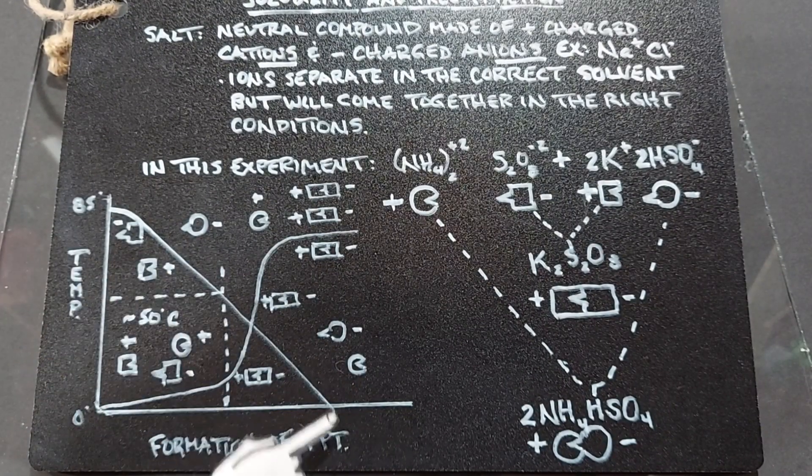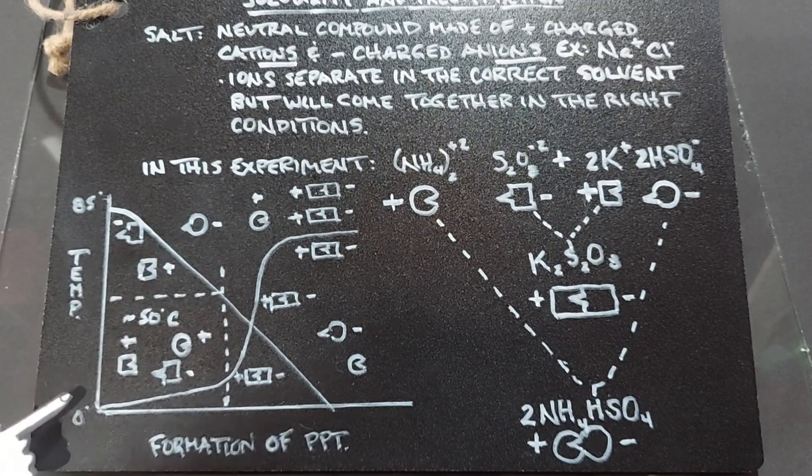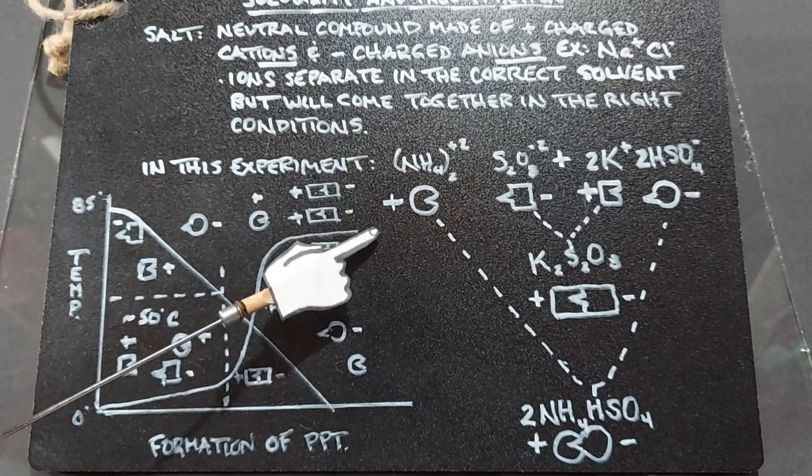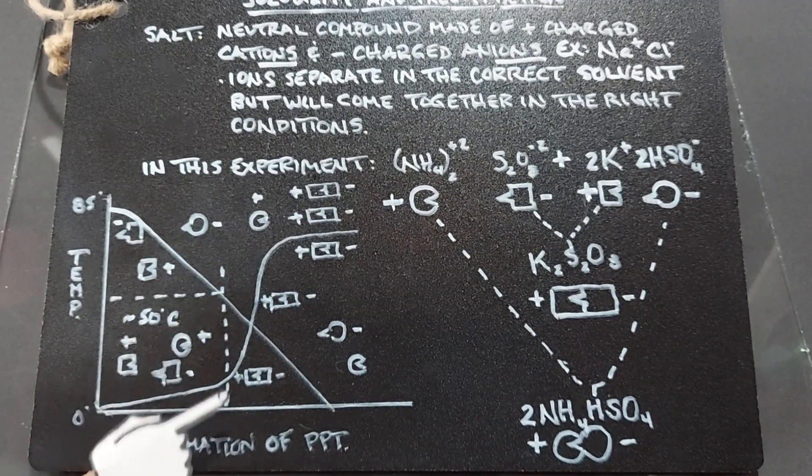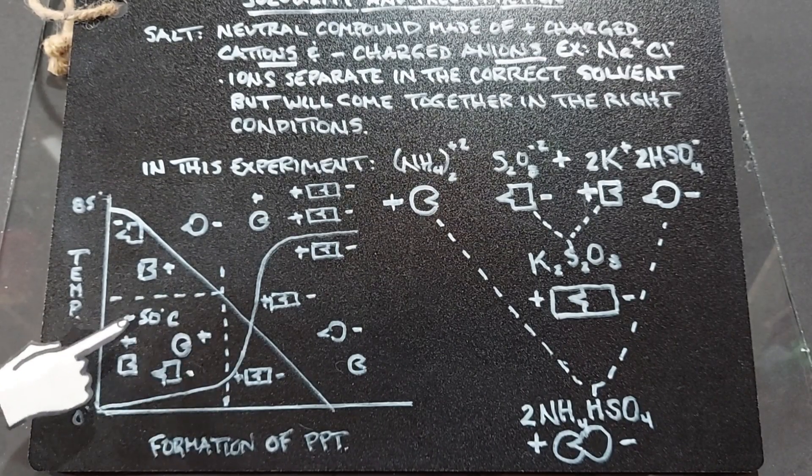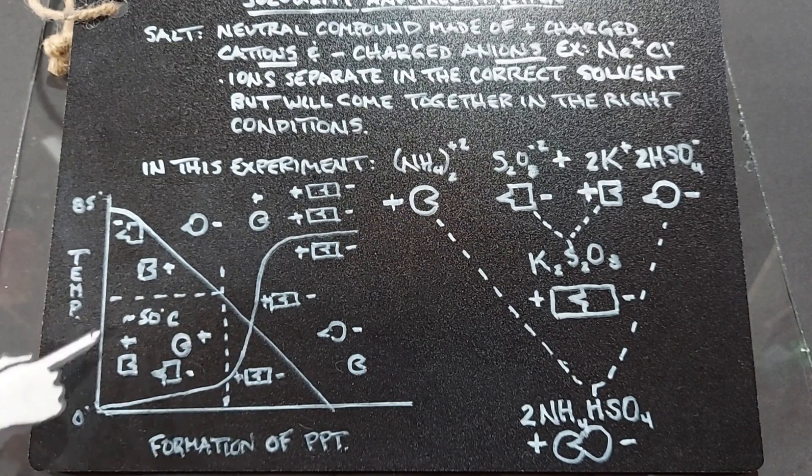So at the point that the precipitate really starts to come out of solution, if we come up here and across, it turns out to be around 50 degrees Celsius. This is not exactly the ratio here, but it is around 50 degrees Celsius that the potassium persulfate will come out of solution.